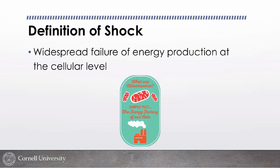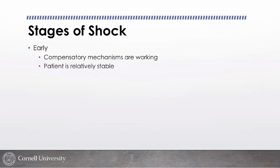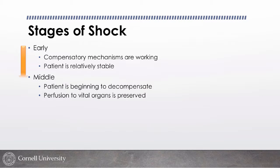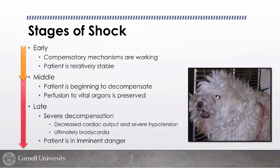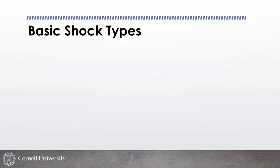Briefly, shock is basically an inadequate ability to make ATP at the cellular level, and 99.9% of the time that is due to inadequate oxygen delivery to those cells. We see different stages: very early shock where healthy animals compensate and you may not even recognize it; a middle stage where they're starting to decompensate; and then late shock, progressing to terminal bradycardic shock where you can't pull them back. Our goal is to stop the progression before it gets there.